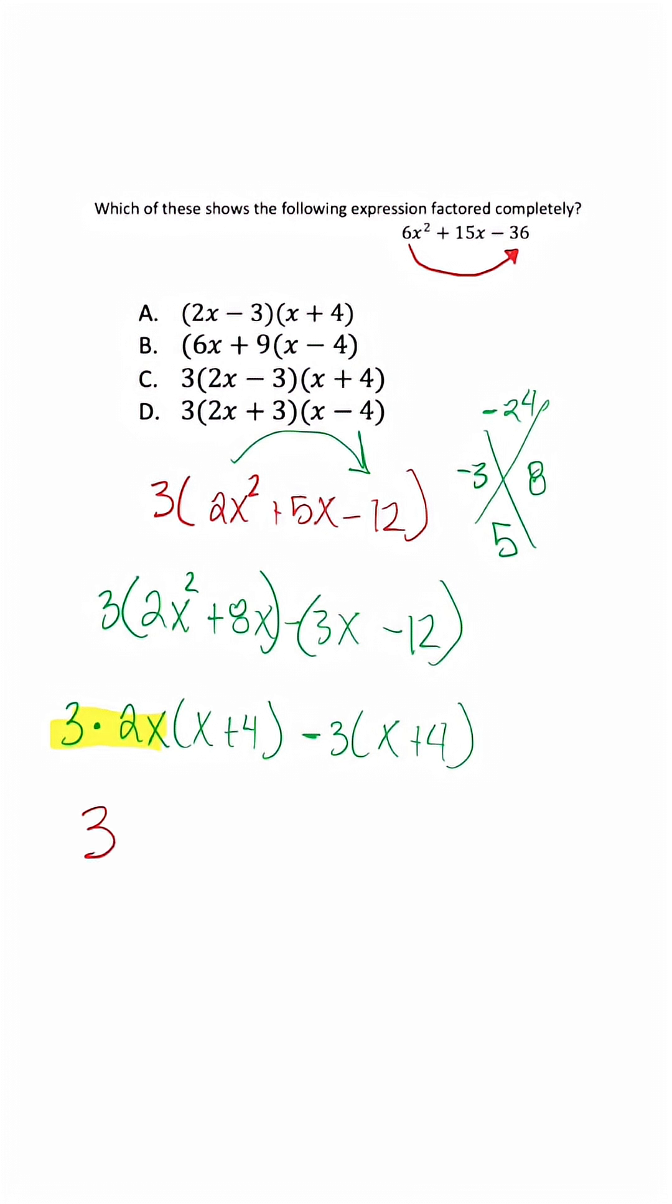3 is on the outside. Here's our second factor, x + 4, and the third factor is what's outside the parentheses, which is 2x - 3.